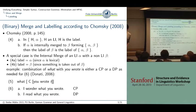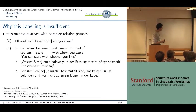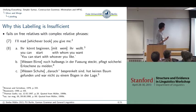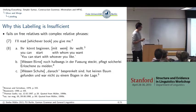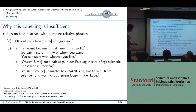The problem is that Chomsky's labeling approach fails on more complex cases. There's a paper by Bresner and Grimshaw from '78 where she has examples like 'I'll read whichever book you give me.' There are also German examples: 'Dessen Birne noch halbwegs in der Fassung steckt, pflegt solcherlei Erloschene zu meiden' and 'Dessen Schuhe danach besprenkelt sind, hat keinen Baum gefunden und war nicht zu einem Bogen in der Lage.' These things are problematic because these are complex phrases, and the labeling account doesn't work for them.